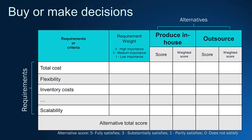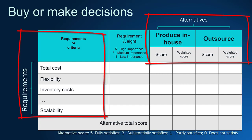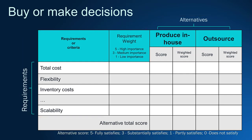Here you have another very common application: the buy or make decision. In the columns we have the two alternatives — buy or make — and in the rows, the business requirements. By scoring the pros and cons of each alternative, you can find what is better for the company.